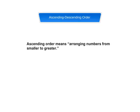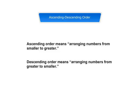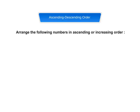Ascending order and descending order. Ascending order means arranging numbers from smaller to greater. Descending order means arranging numbers from greater to smaller. Let us understand these terms by an example. Arrange the following numbers in ascending or increasing order: 7,540; 989; 4,354; 67.